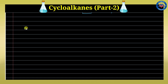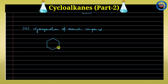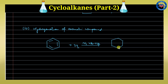The next method is hydrogenation of aromatic compounds. When we hydrogenate benzene in the presence of nickel metal at 423 to 473 Kelvin temperature, we get cyclohexane formation. This is a very simple method for conversion of aromatic compounds into cycloalkanes. Similarly, cyclobutadiene can be hydrogenated to cyclobutane.